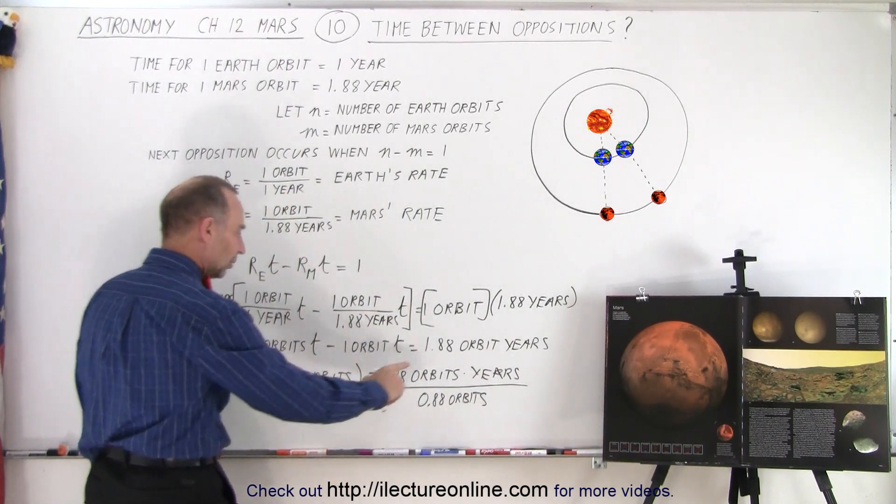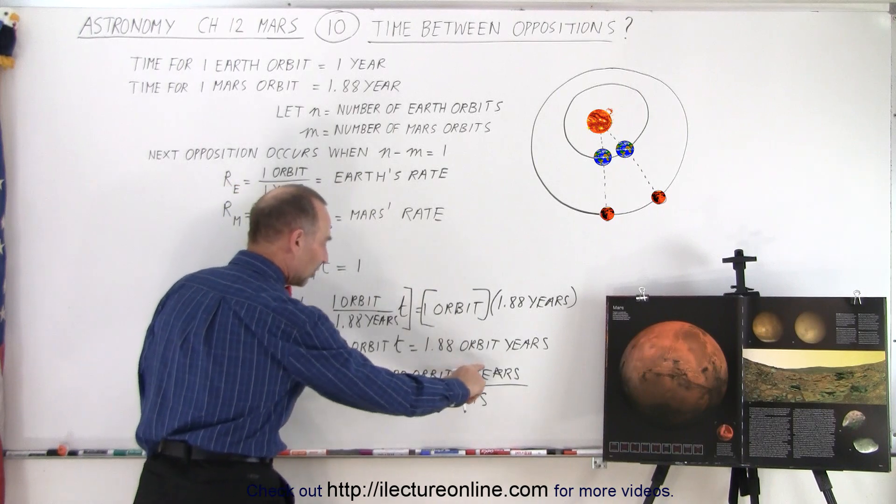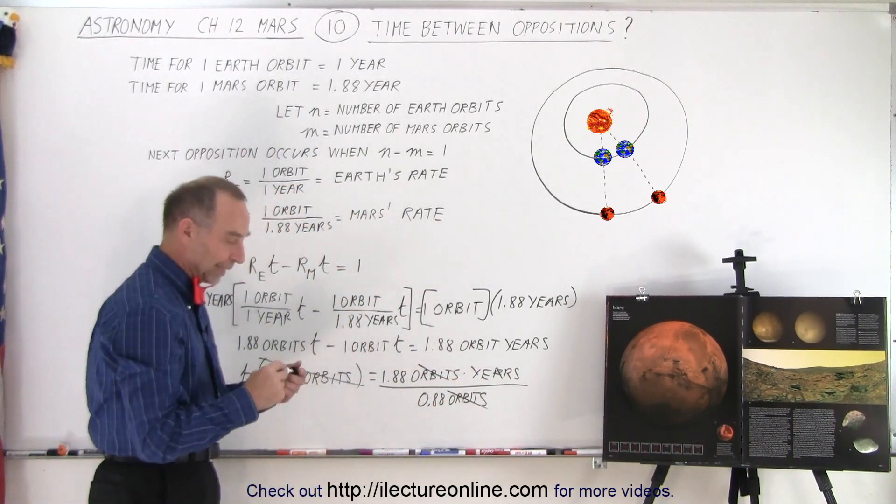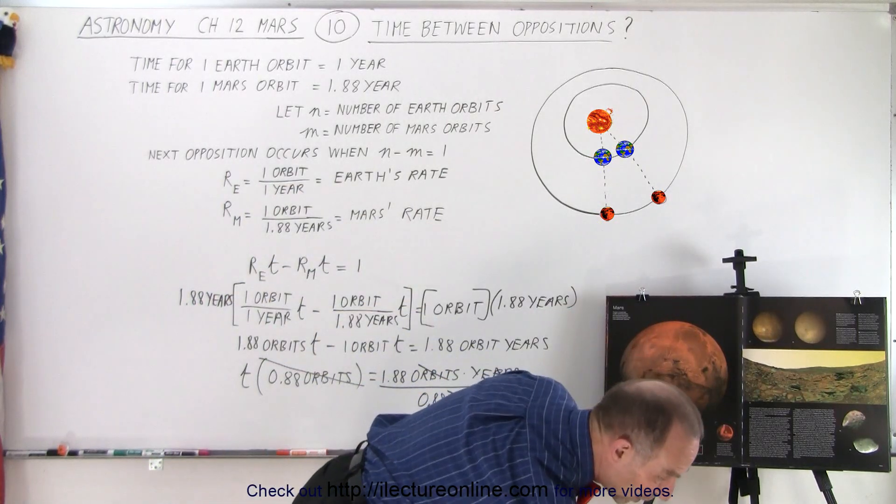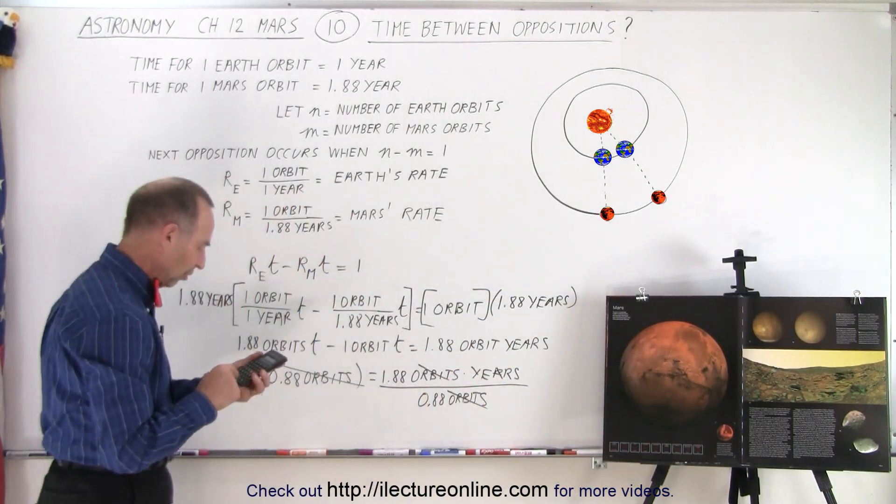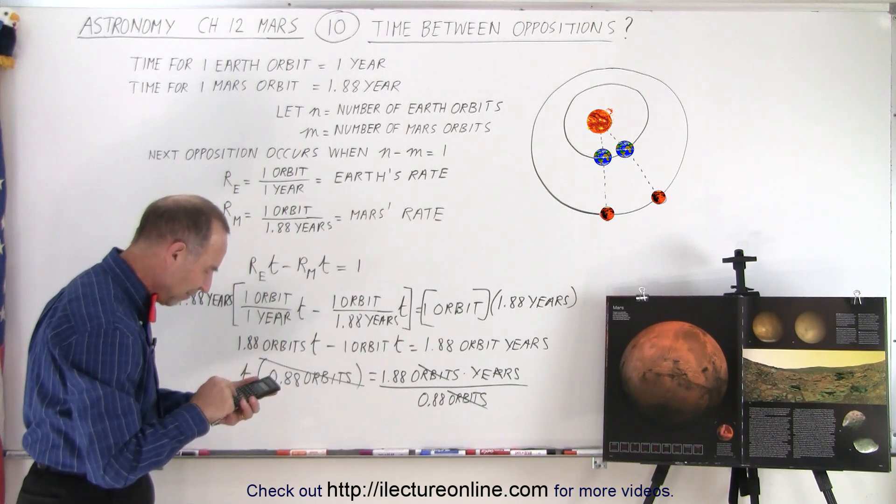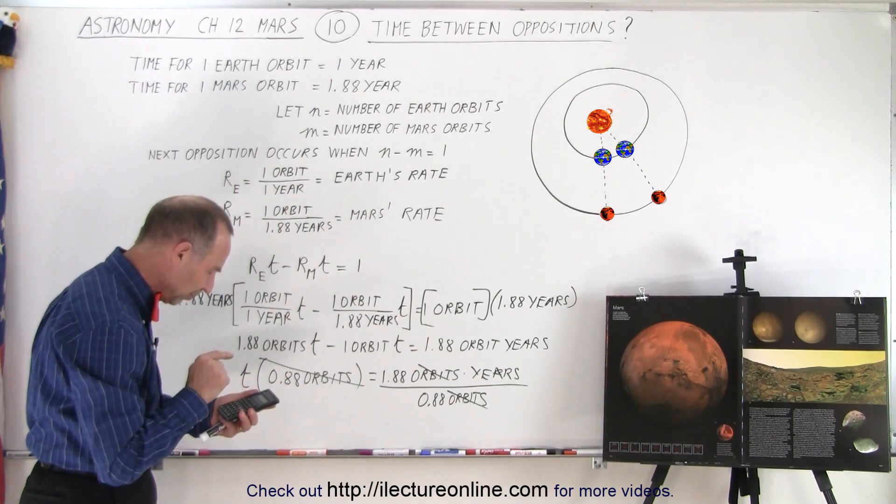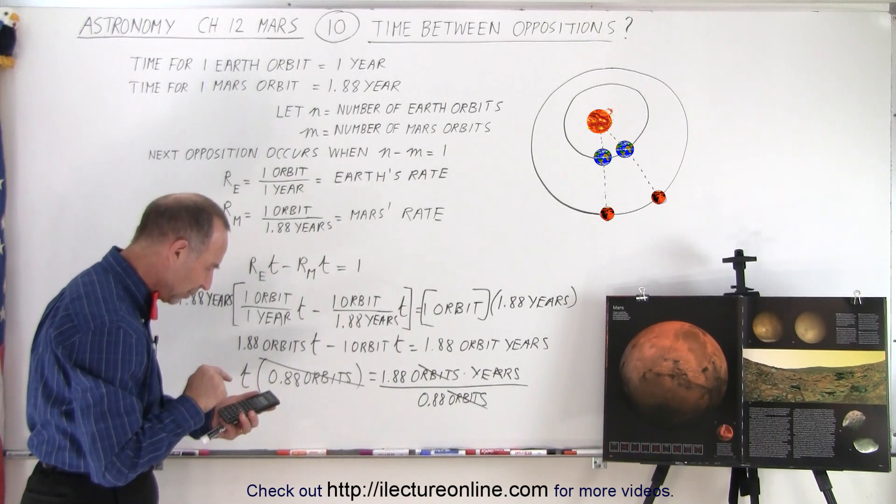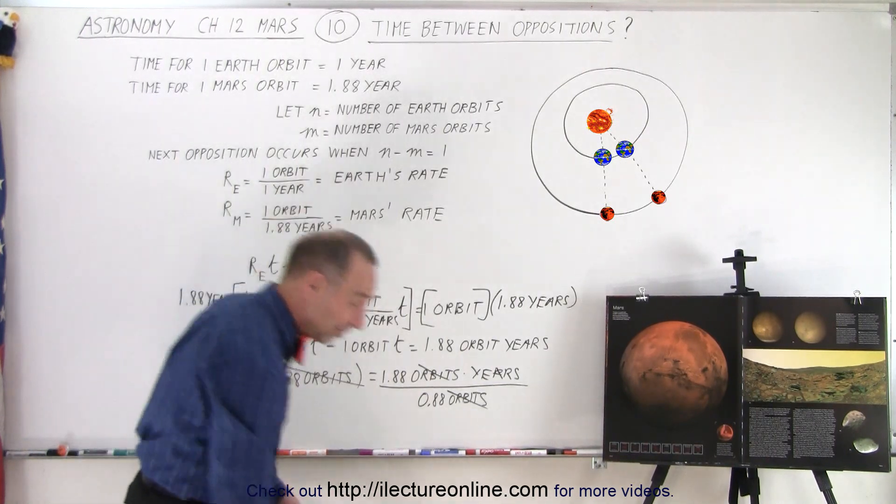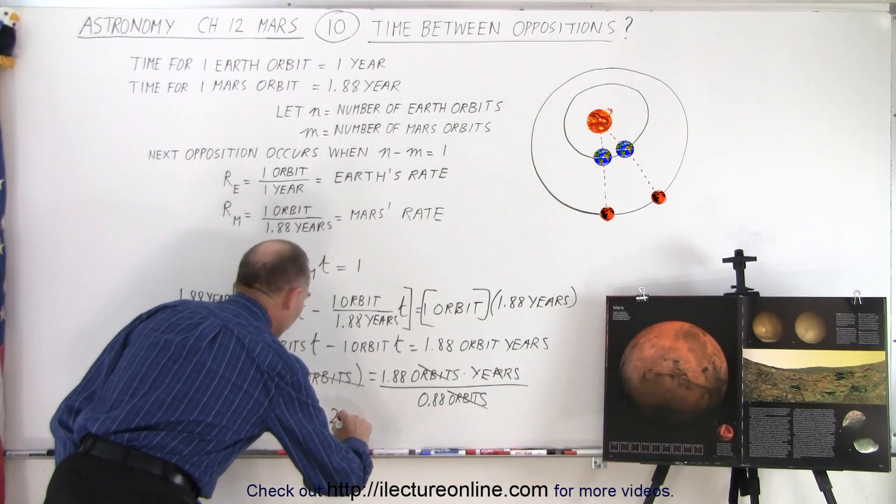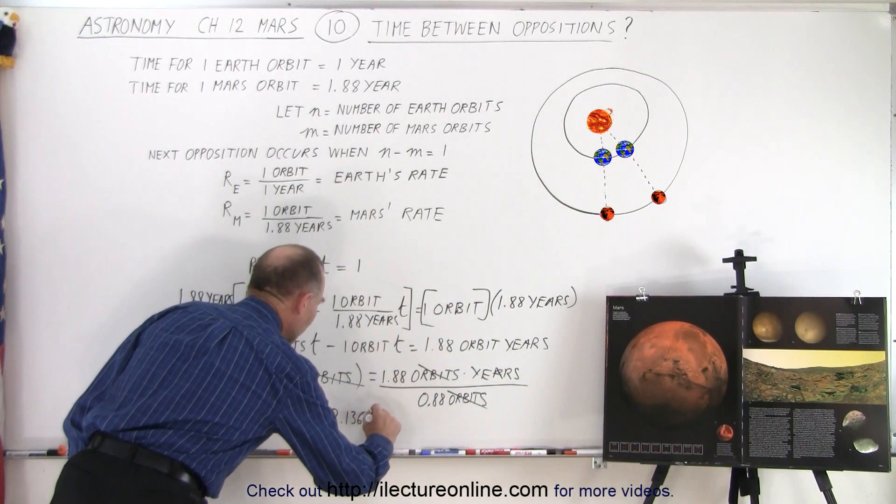And now with a calculator, we will end up with calculating t in number of years. So 1.88 divided by 0.88 equals 2.136 years. So t equals 2.136 years.